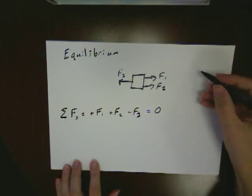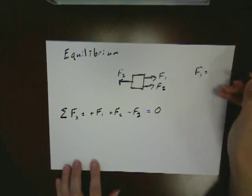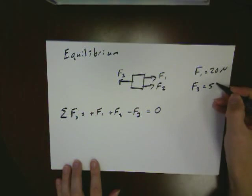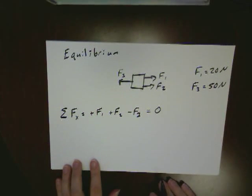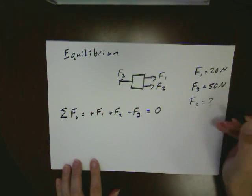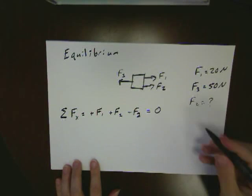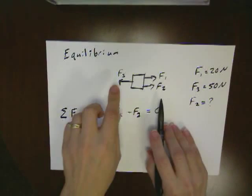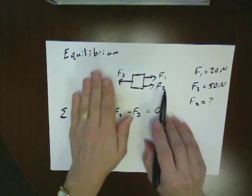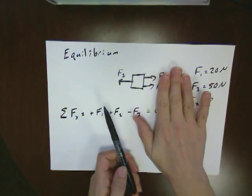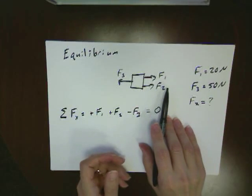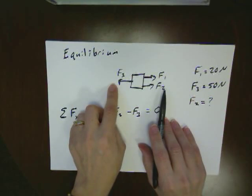Now if I'm given two of these three forces, maybe I'm told that F1 is 20 newtons and F3 is equal to 50 newtons, I could come back and say, what's my unknown F2? Well, these are simple enough numbers you can probably conceptually picture out. If I'm going to have this in equilibrium, I have to have the same amount over here pulling to the left as I have pulling to the right. So if I've got 50 over here and only 20 here, well, what do I need to make up to equal out to that 50? It's going to be 30.